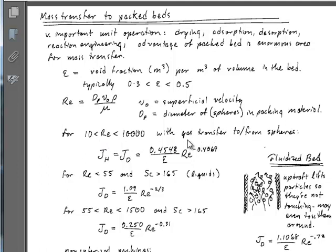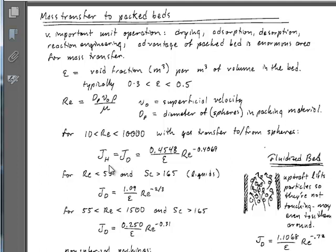This particular correlation applies to gases flowing through packed beds at Reynolds numbers between 10 and 10,000. For that range, it gives the Chilton-Colburn J factors as a function of a friction coefficient correlation: 0.4548 over epsilon times Reynolds number to the power minus 0.4069. If you're in that range, you can estimate your void fraction and flow properties, and then estimate mass transfer and heat transfer coefficients by computing the numerical value of this J factor and backing out using heat capacity, Schmidt number, Prandtl number, and related quantities.